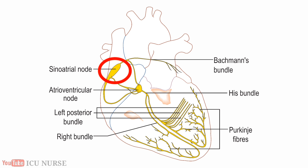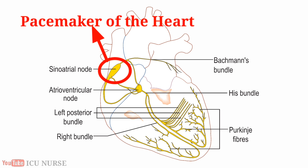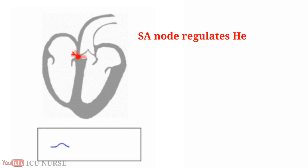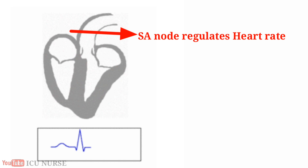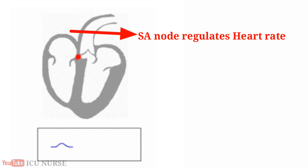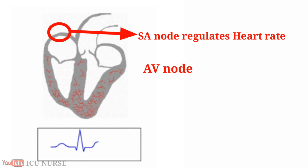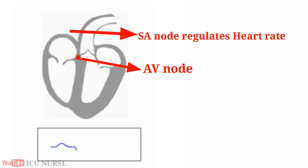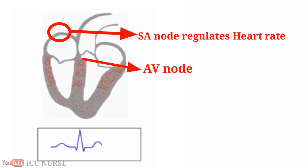The sinoatrial node, also called the SA node, is literally the pacemaker of the heart. It regulates heart rate through specialized conduction, first communicating to the atria causing them to contract, and then communicating to the atrioventricular node, which in turn communicates to the ventricles causing them to contract.